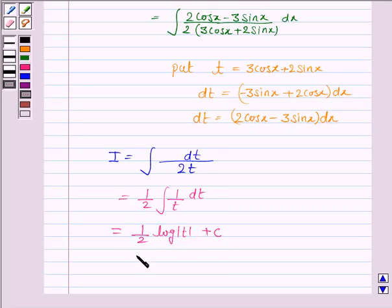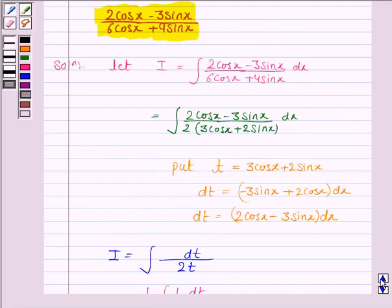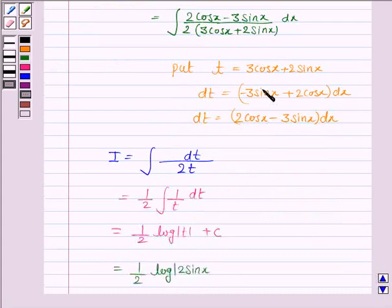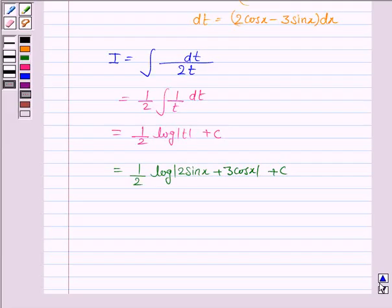Let's now substitute the value of t. It is 1 by 2 log mod 2sinx plus 3cosx plus c.